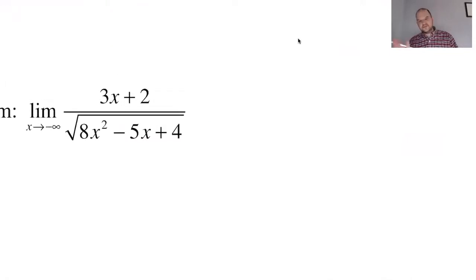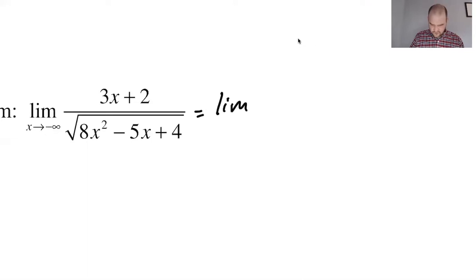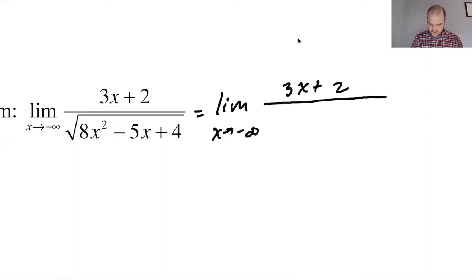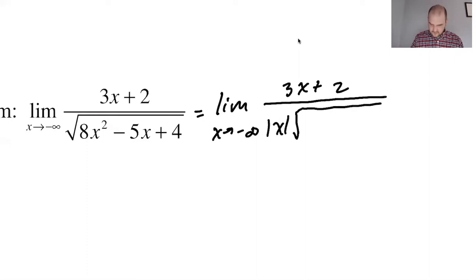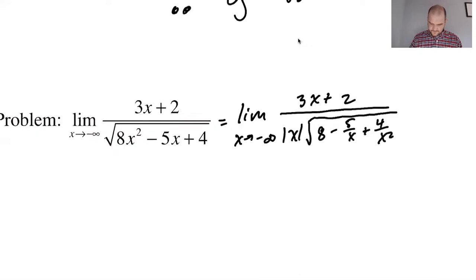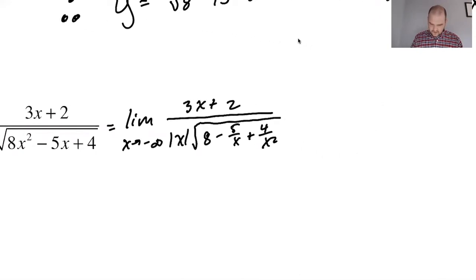Now let's do the next problem: the limit as x approaches negative infinity of the same function. All of the work is going to look exactly the same, so I'm going to jump right to the step with the absolute value of x times the square root of (8 − 5/x + 4/x²). See the previous problem if you're not sure why.